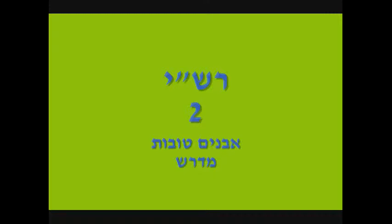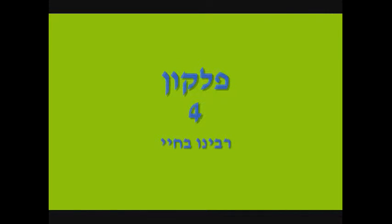Vayolen shom balailo hahu, v'yikach min habo b'yodo mincha l'Esov ochiv. What does 'minhabo b'yodo' mean? Several pshutim. Number one: Rashi says 'v'yodoi b'reshusoi' — Rabbeinu Bechaya explains it means from his own legitimate property, not from stolen goods. Another pshat: Rashi brings from Medrish — 'minhabo b'yodo avonim toivos u'margolyos,' precious stones and expensive objects, things that a person carries in his hands close to himself; he gave Esav expensive jewelry. Third pshat: 'minhabo b'yodo chulin' — he separated maaser and from the chulin sent the gift to Esav. Another pshat from Rabbeinu Bechaya: he sent him 'oiv hanikro falcon' — Esav was a hunter and used falcons; he sent something Esav loved to have in his hand.